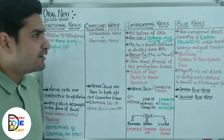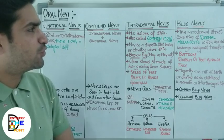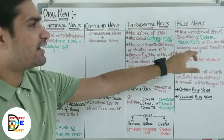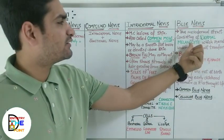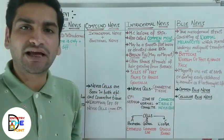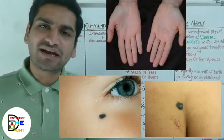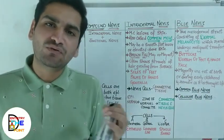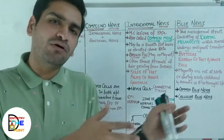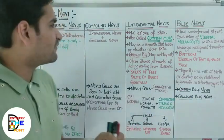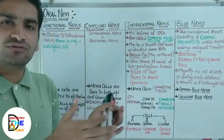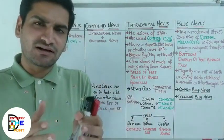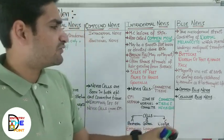Now we are left with blue nevus. Blue nevus is a true mesodermal structure consisting of dermal melanocytes, which rarely undergo malignant transformation. The most common sites are buttocks, dorsum of feet and hands, and face. The majority of blue nevi are present at birth or during early childhood and persist throughout life — unlike junctional, compound, or intradermal nevi, which tend to decrease in number as age increases.